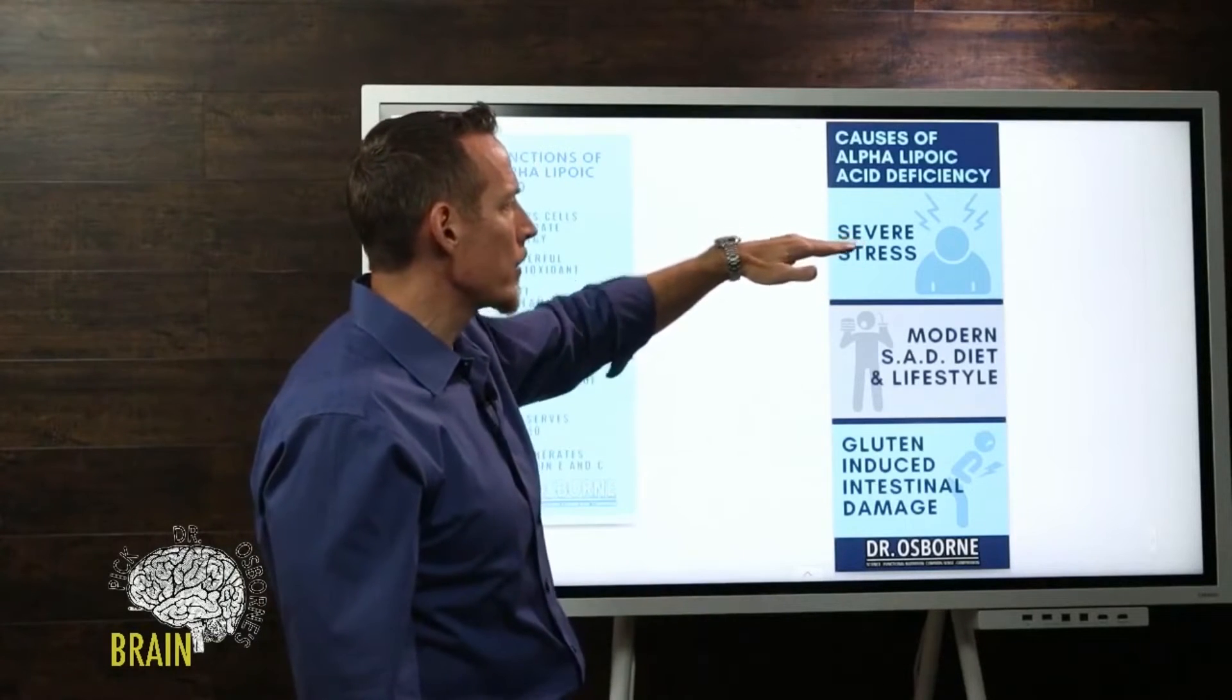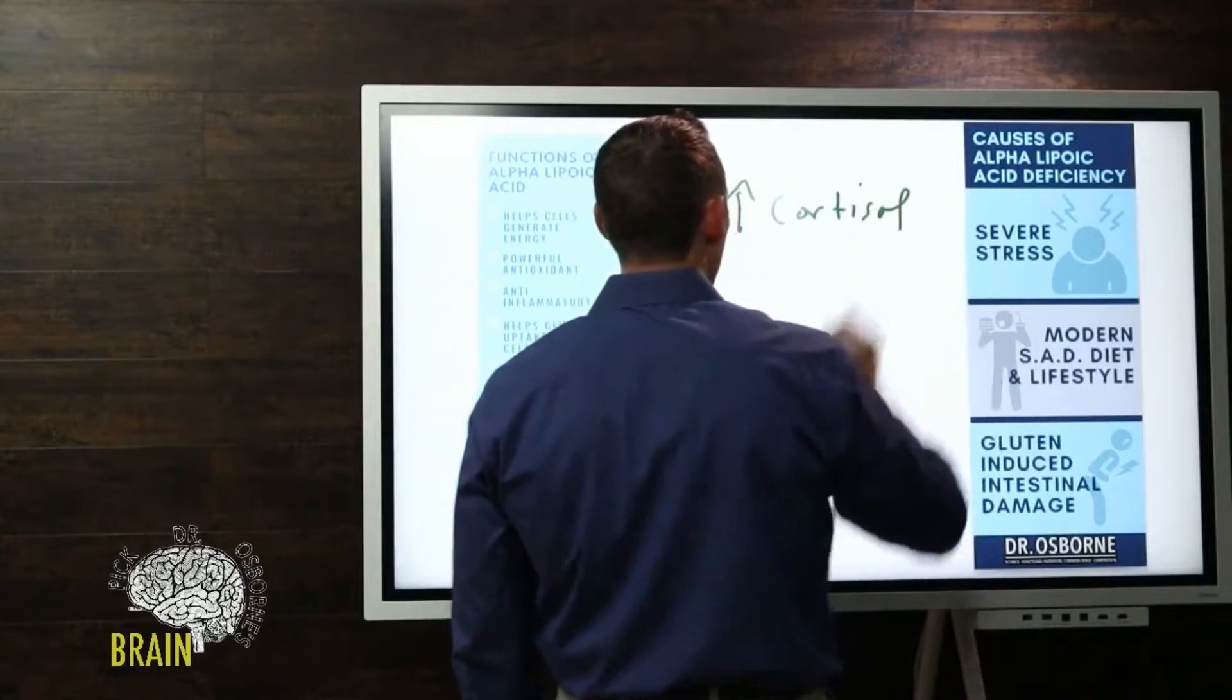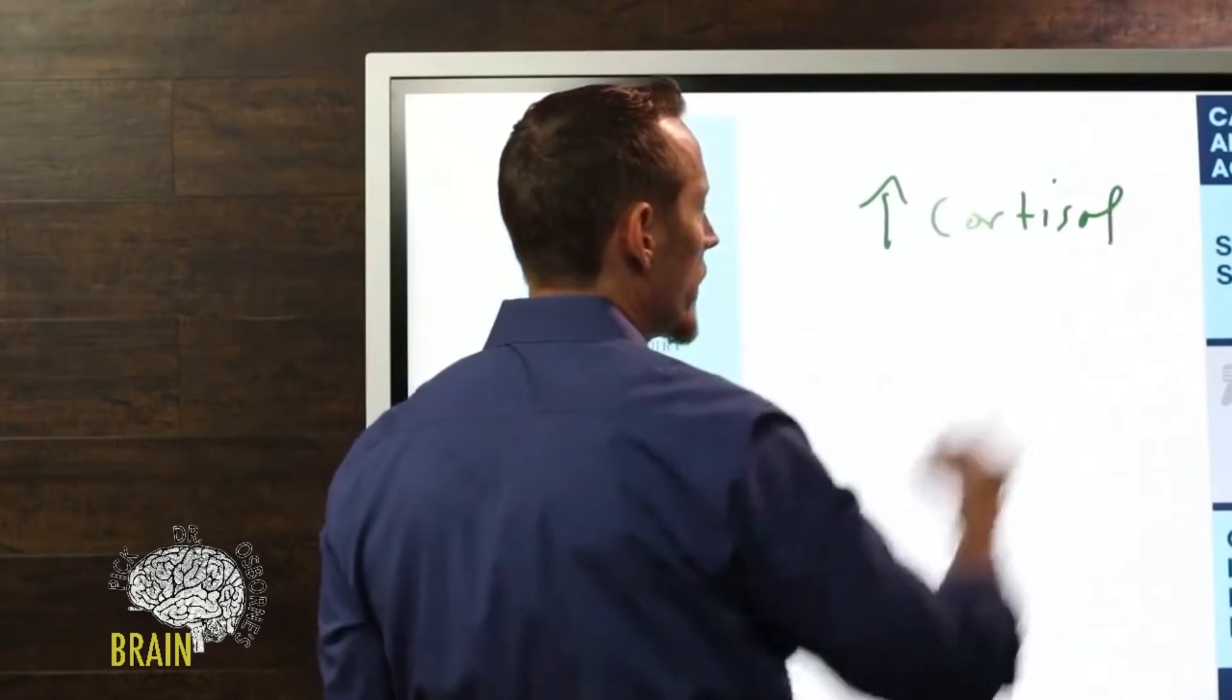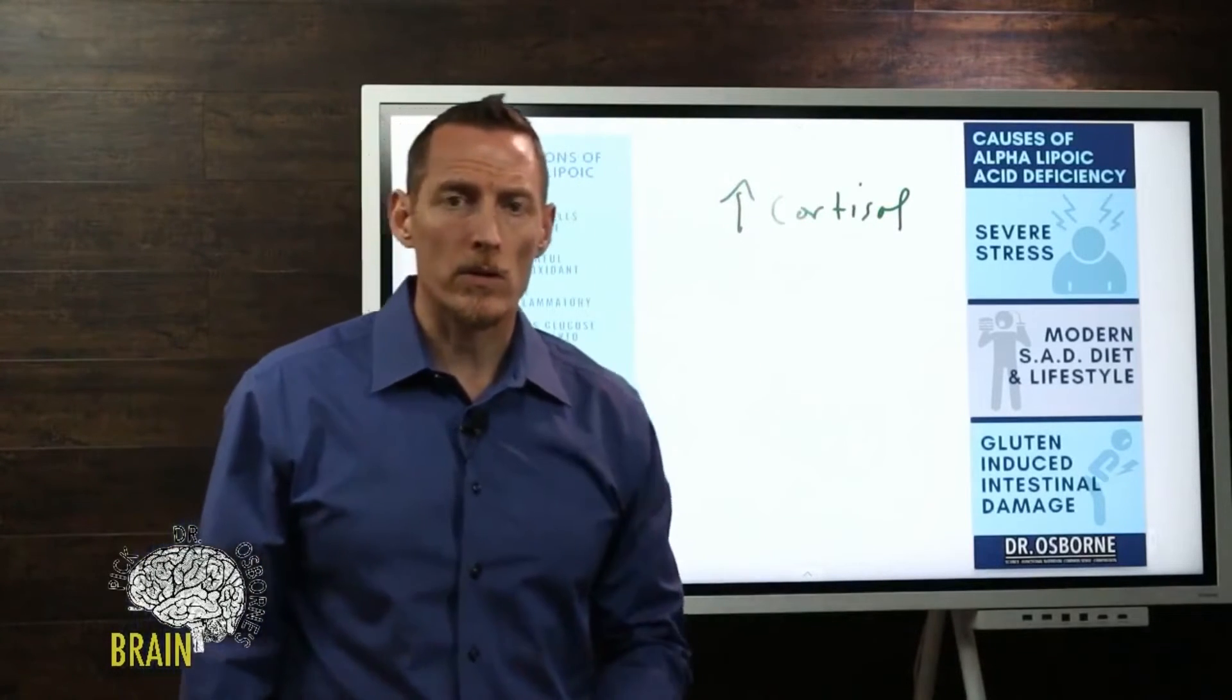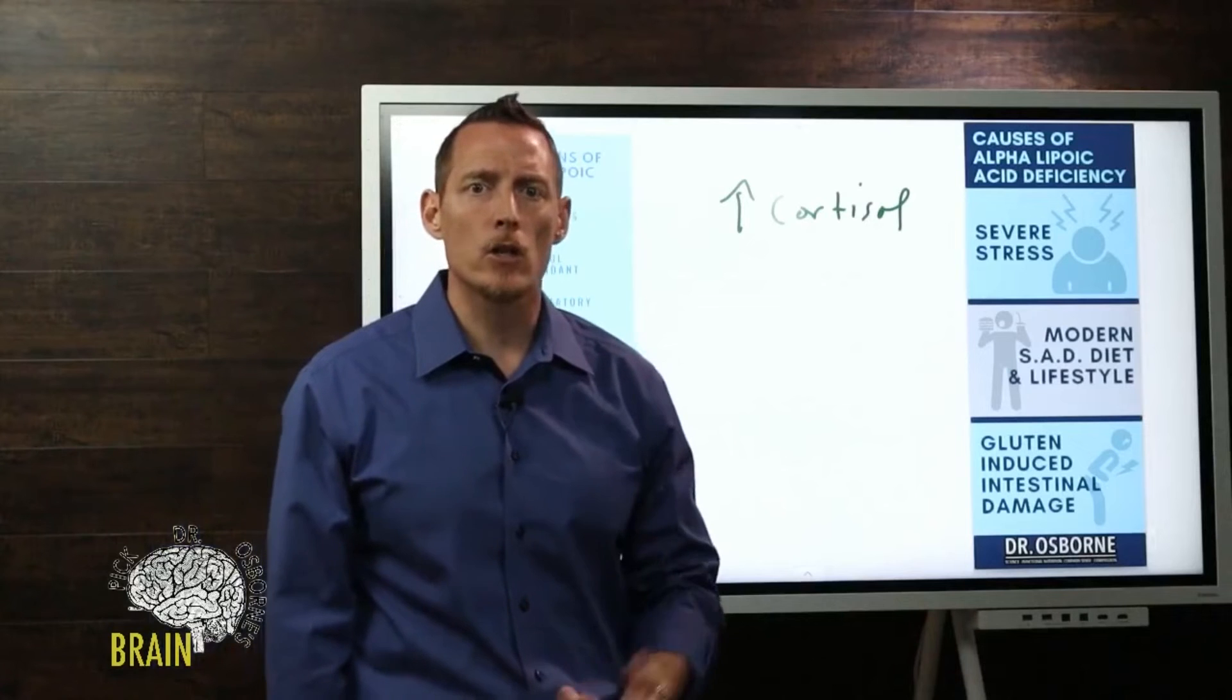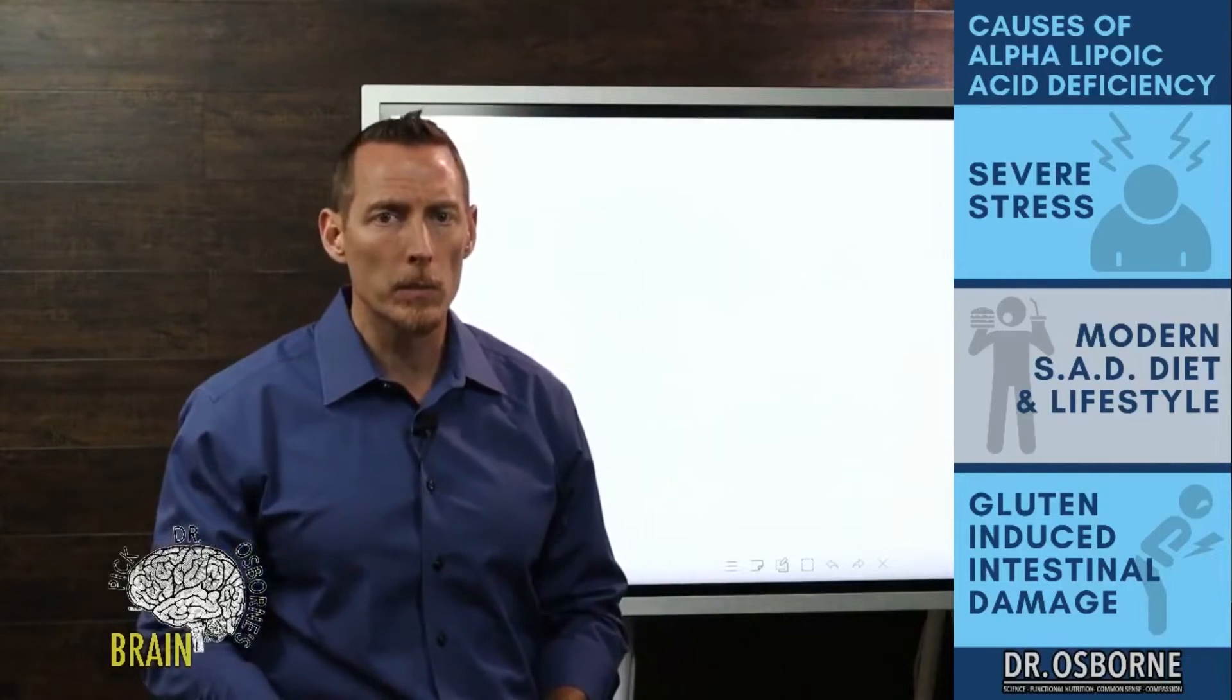Here's how stress increases cortisol. When your cortisol goes up - remember cortisol is a stress hormone - when you have severe stress, you get an increase in cortisol. One of the side effects of elevated cortisol is that cortisol elevates your blood sugar. Cortisol tells your liver to dump sugar into your bloodstream even if you're not eating sugar, even if you're eating a low sugar or keto diet. If you've got chronic stress, that elevation in cortisol causes your body to dump more sugar into the bloodstream from the liver.